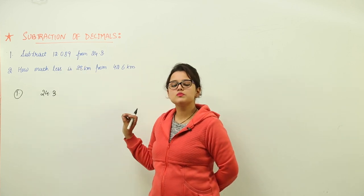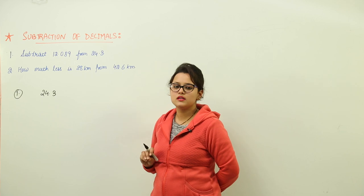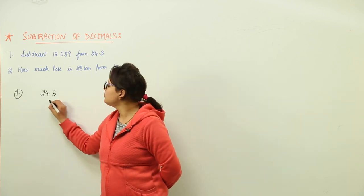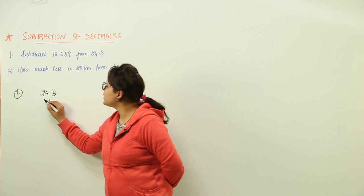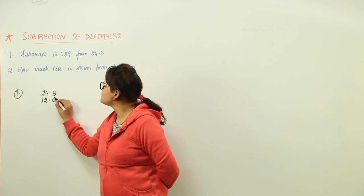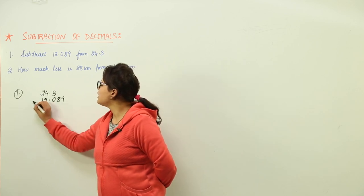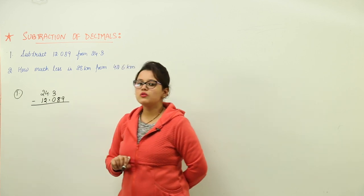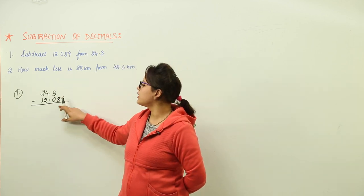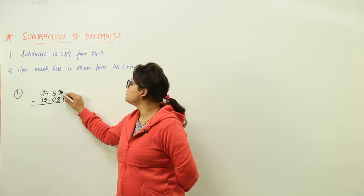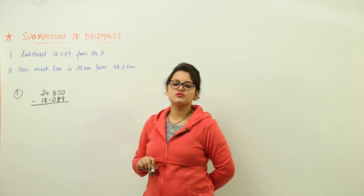The same rule has to be followed in subtraction as in addition. That is, you have to write decimal below the decimal. That is, you will write 12.089 and subtract. Now you are going to ask me how are we going to subtract these values? We will add the number of zeros to make it even.